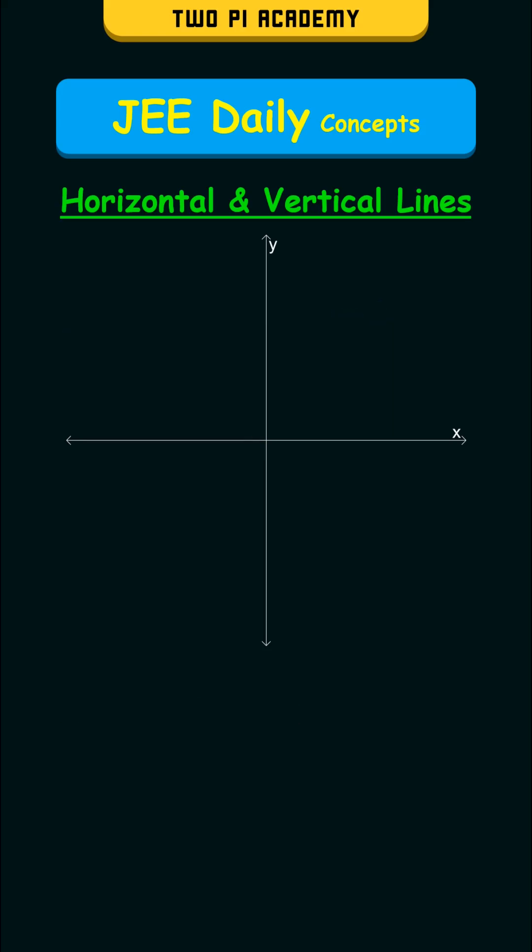Similarly, a vertical line is a line that is parallel to the y-axis. And for a vertical line, the x-coordinate of every point on it is constant. Let's say this is a, then the equation of the vertical line is of the form x equals a.